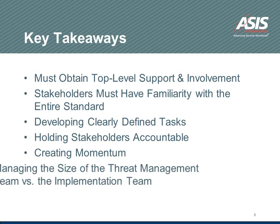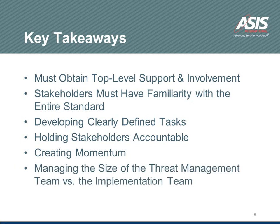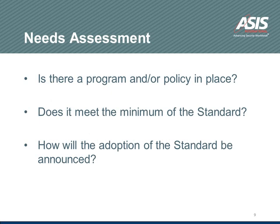Creating that momentum. And finally, managing the size of the threat management team versus the implementation team. There were members of the implementation team on the workplace violence side that thought they were going to be part of the threat management team, and it just really wasn't necessary. So for the needs assessment: is there a program or policy in place? Does it meet the minimum of the standard? If it doesn't, that's a gap. We'll log the gap. And then how will the adoption of the standard be announced? Once our goal is to reach the level of the standard, how do we share that with our colleagues? How do we get our employees to know about this new or enhanced program?